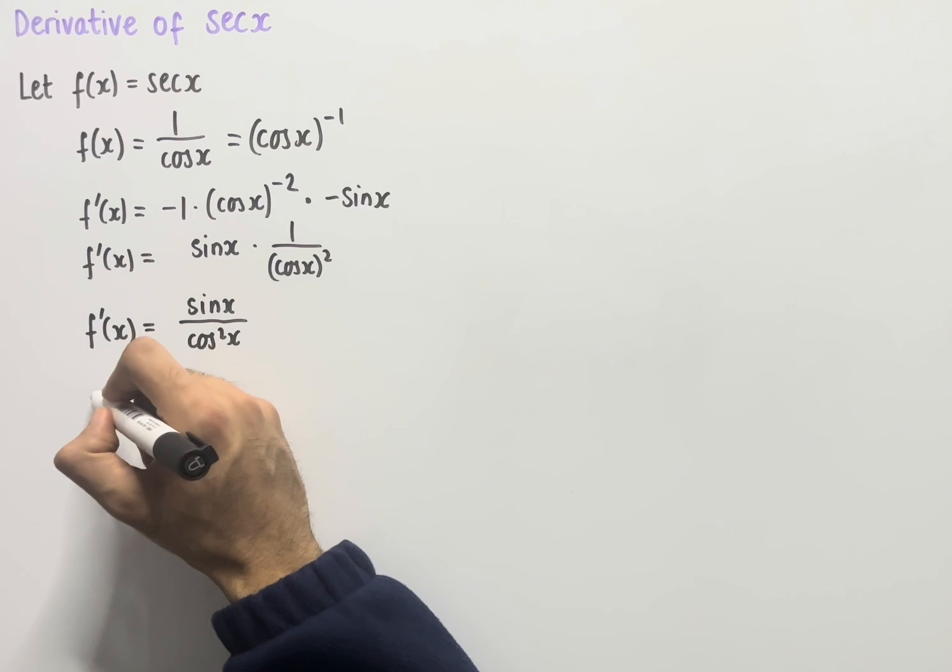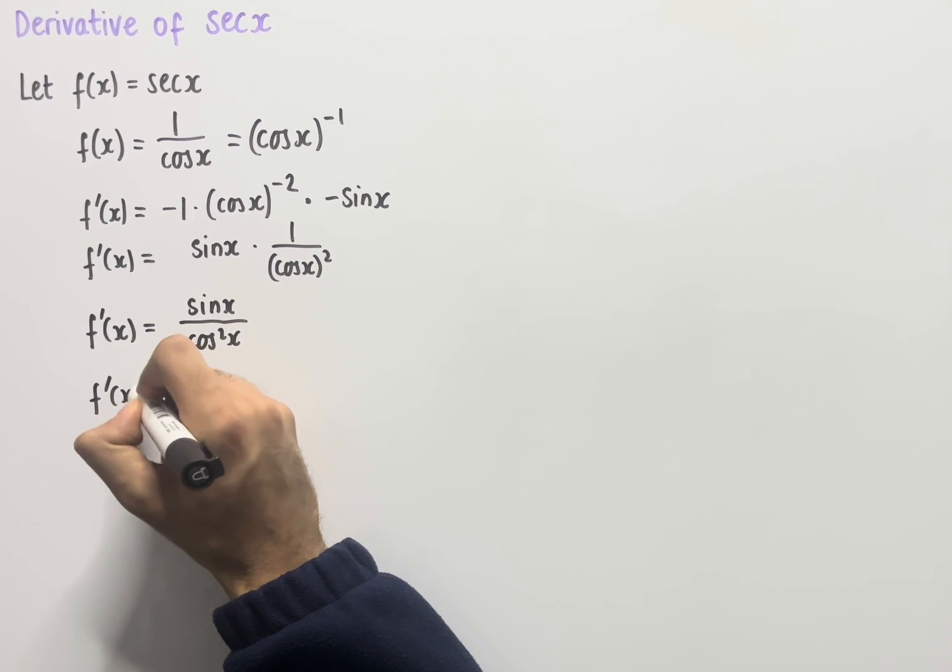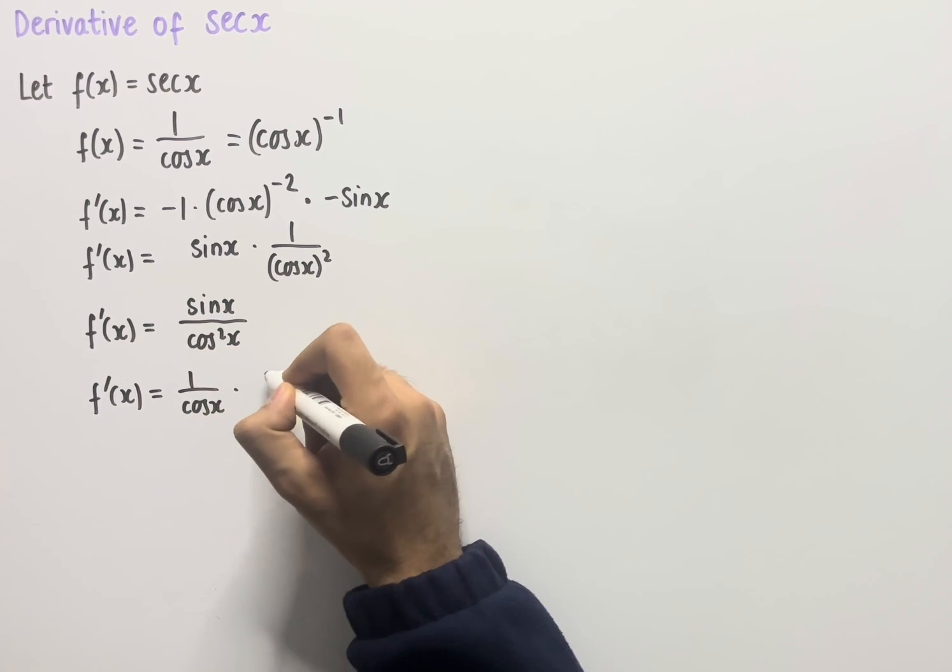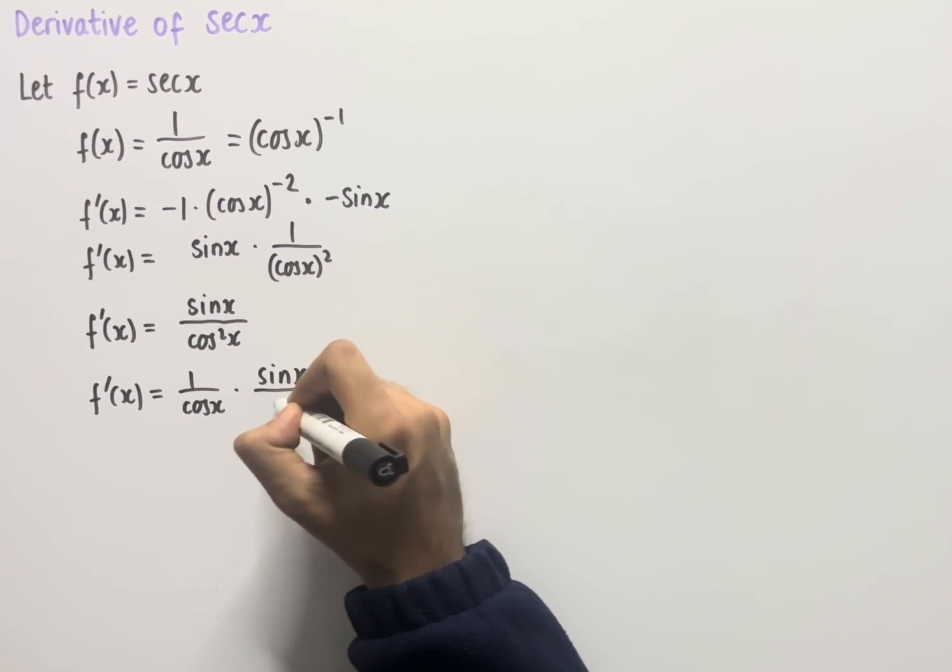Now if we split this up, we have f'(x) which equals 1 over cos x multiplied by sin x over cos x.